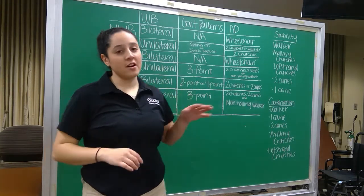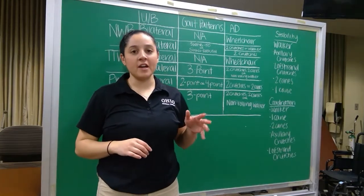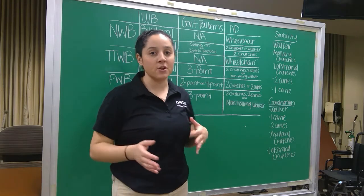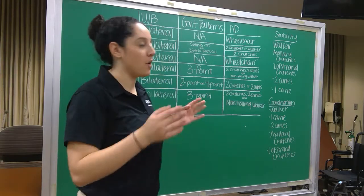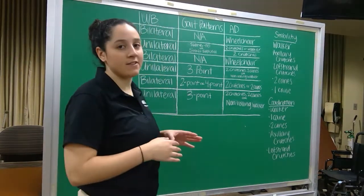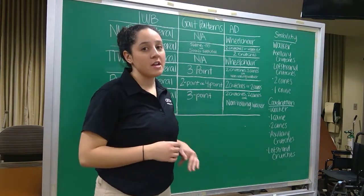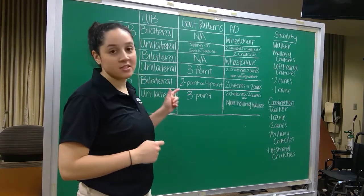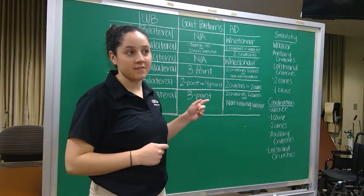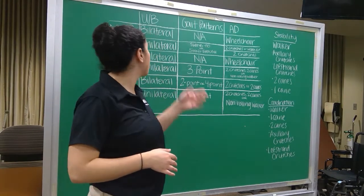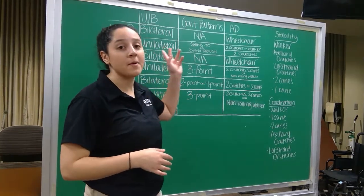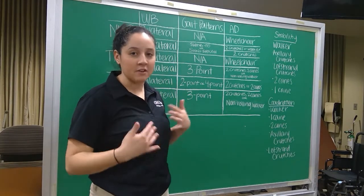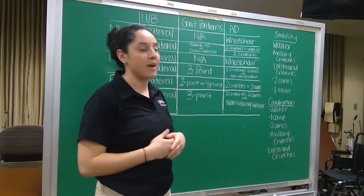Now I'm going to talk about this chart briefly — you also have this chart on your paper. I'm going to give you an example of how to use this flowchart, which will help you make the best decision on the assistive device based on the weight-bearing status. I'll start with non-weight-bearing and then you can figure out the rest.